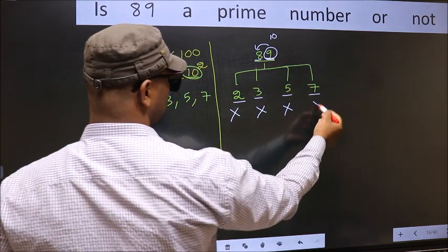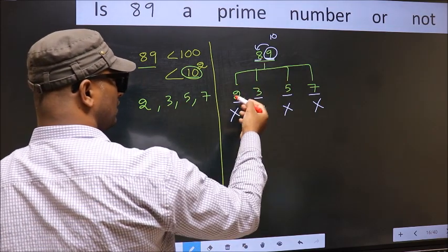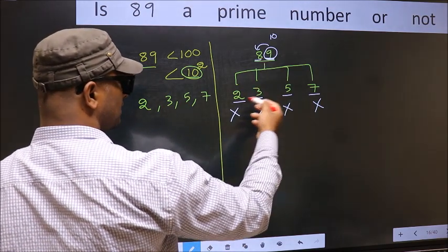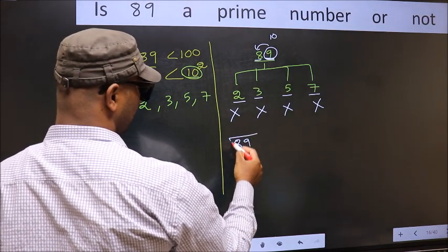So this number also not divisible by 7. So 89 is not divisible by any of these numbers. Hence 89 is a prime number.